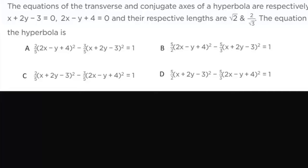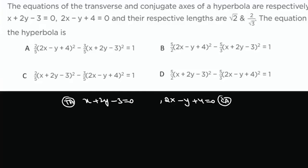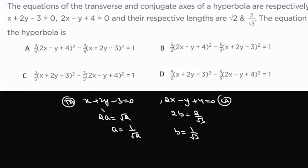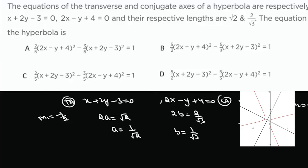Example 1: The transverse and conjugate axes of a hyperbola are x + 2y - 3 = 0 and 2x - y + 4 = 0 respectively, with lengths √2 and 2/√3. So 2a = √2 giving a = 1/√2, and 2b = 2/√3 giving b = 1/√3. The slope of the first line is -1/2 and of the second is 2, so m₁ · m₂ = -1, confirming they are perpendicular.